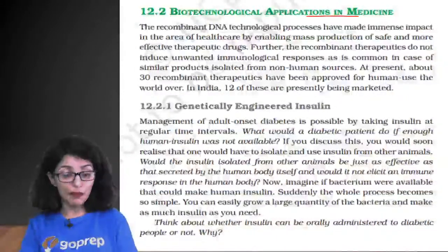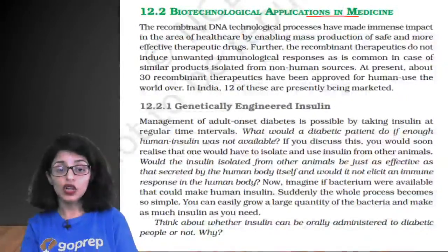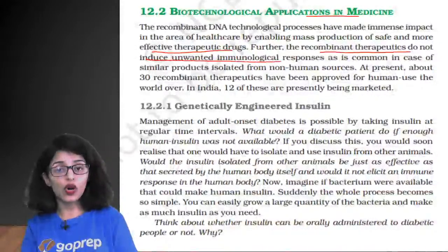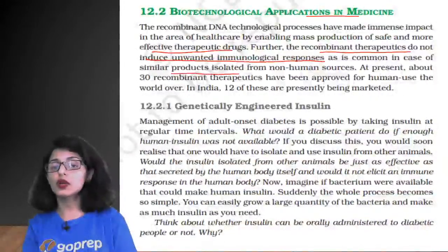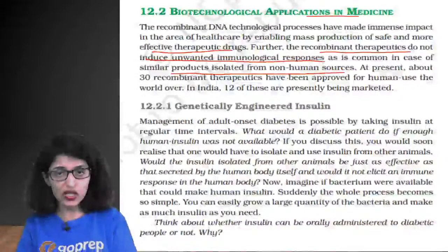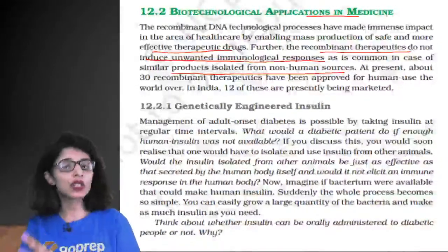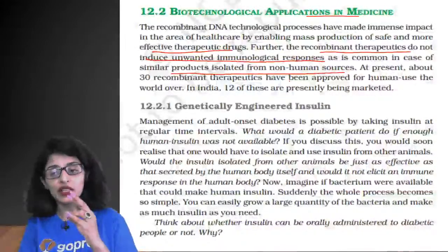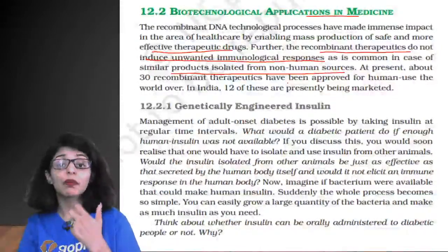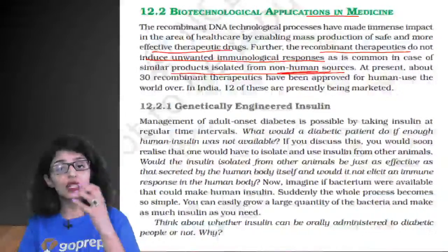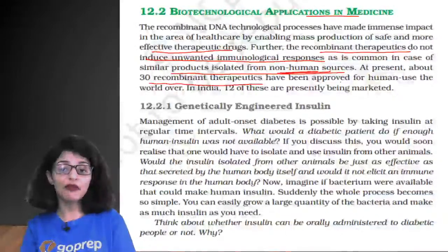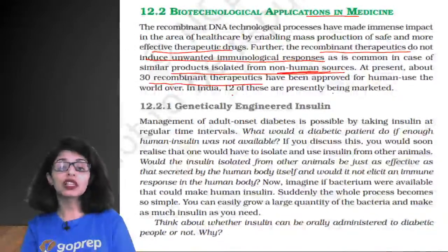Applications in medicine: recombinant therapeutics do not induce unwanted immunological responses, unlike products isolated from non-human sources. For example, earlier when recombinant techniques were not available, pig insulin (pigulin) was extracted from slaughtered pigs to treat diabetes — but this used to cause allergic reactions. At present, about 30 recombinant therapeutics have been approved for human use; in India around 12 are being marketed. Now insulin is produced as humulin — completely human insulin.